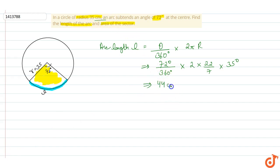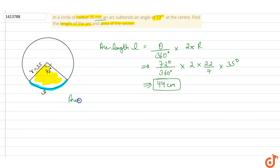The length of the arc is 44 cm. Now we have the area of the sector. The area of the sector formula gives us the result using the length of the arc.